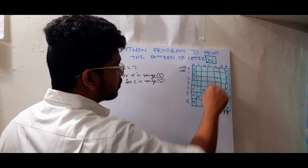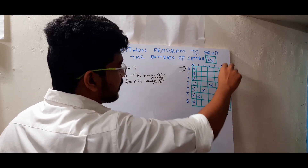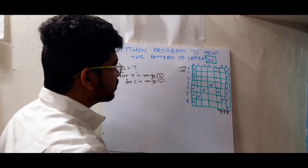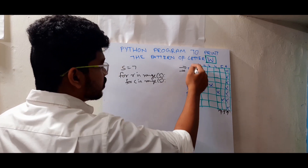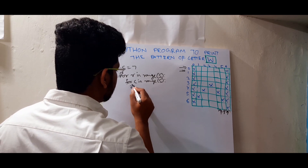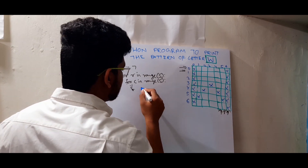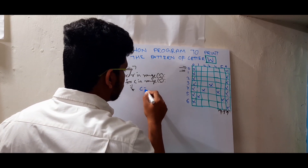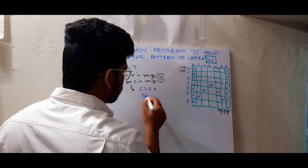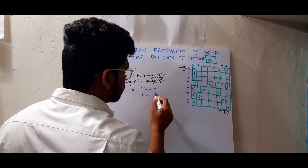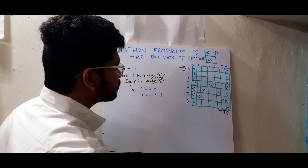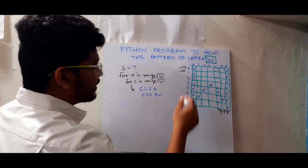So here: the first column, the last column, and these two slanting lines — there will be four conditions. I will write the conditions: if this is the first column, column == 0; and if this is the last column, column == S minus 1. And here if you see, there is a pattern.